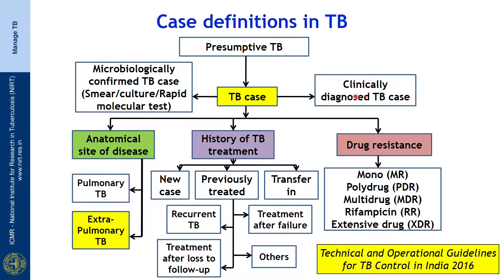If even after five months of TB therapy there is no good clinical or microbiological confirmed response, then we call it treatment after failure. And nowadays with good molecular technologies we can even diagnose drug resistance very quickly — like mono drug resistant, poly drug resistant, or just RIF resistance alone, or MDR TB or XDR.